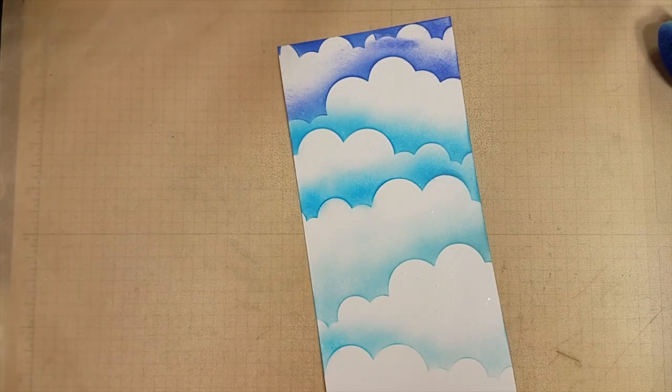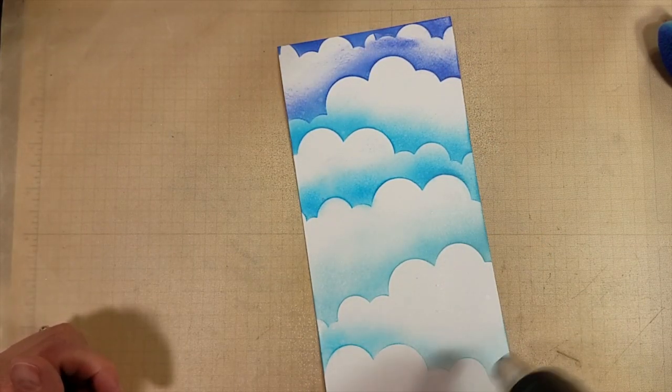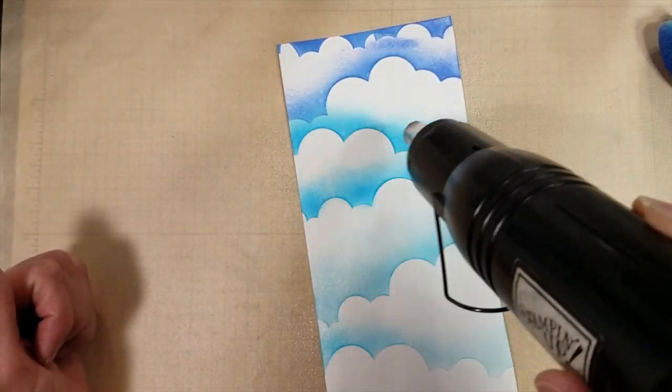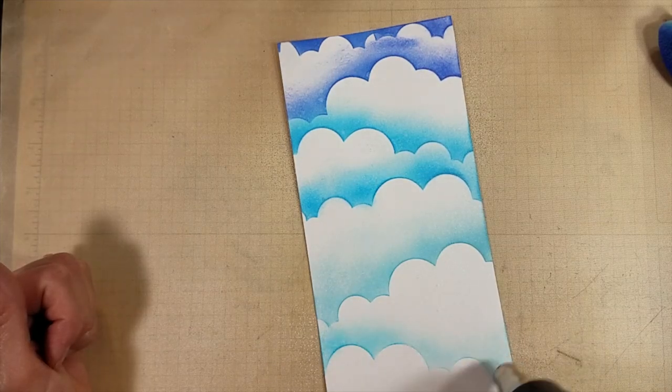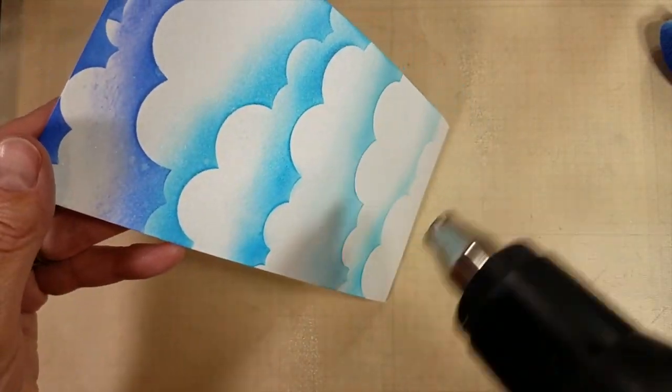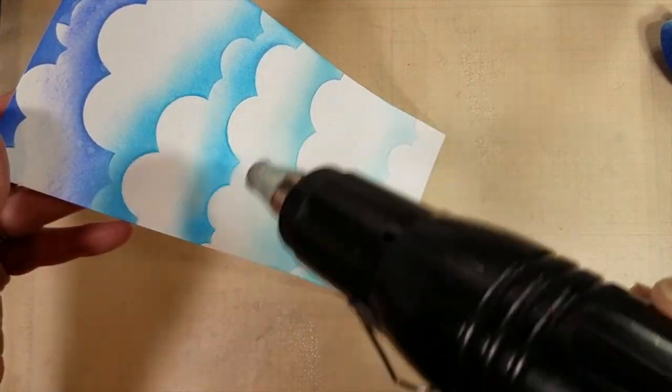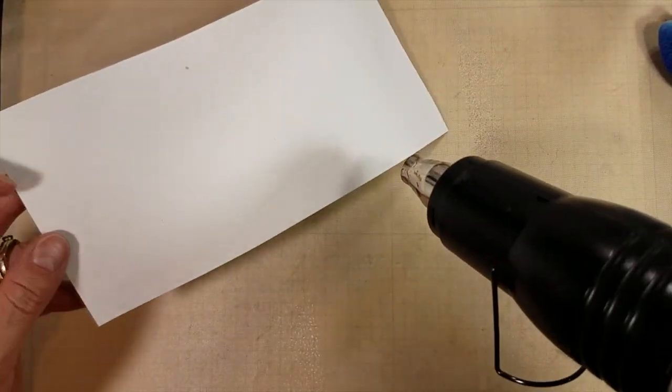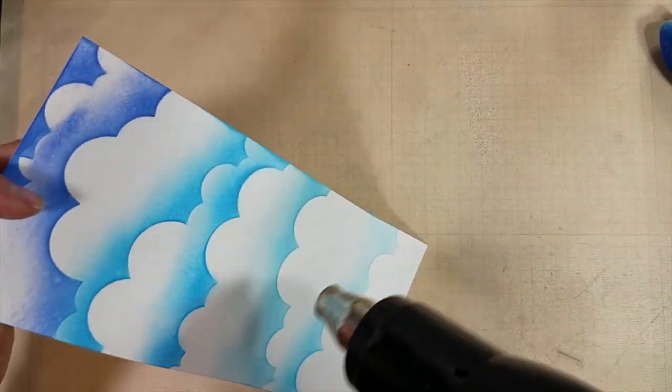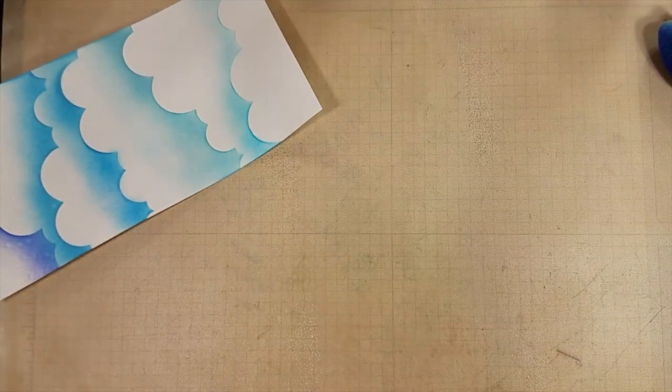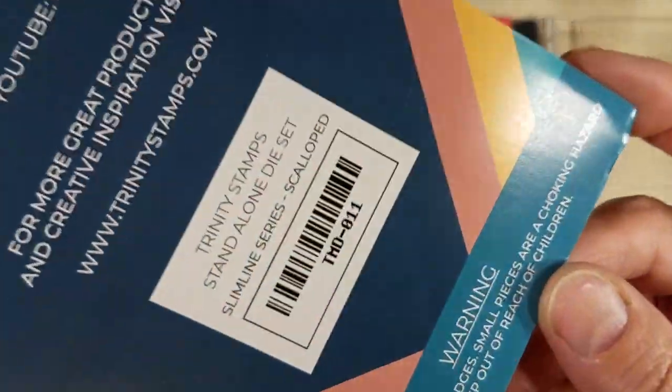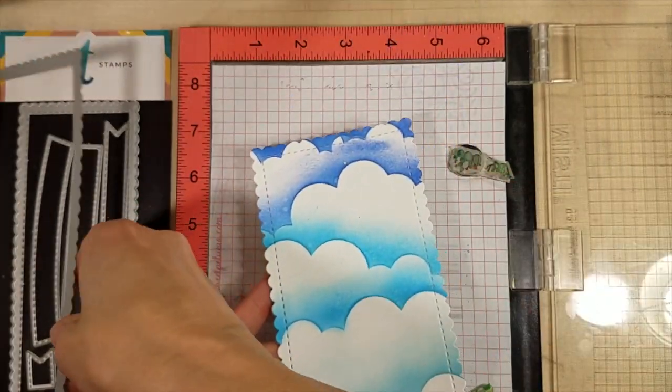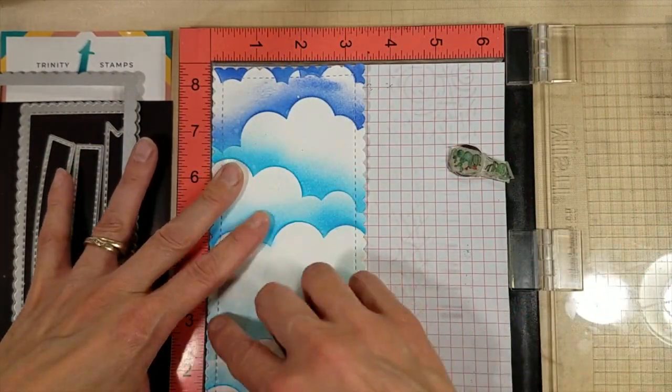Now clouds must have some shimmer, so pearlized water comes to the rescue. That is Perfect Pearls in the Perfect Pearl color added to a spritzer bottle of water. And I'm going to thoroughly dry this with my heat tool also. The entire piece is a lovely shimmery, has a lovely shimmery coat to it now.